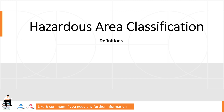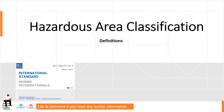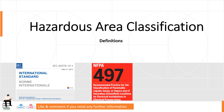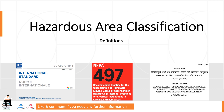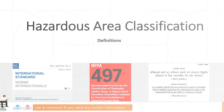Worldwide, different international standards are followed for hazardous area classification. The International Electrotechnical Commission, often called IEC, has published IEC 60079. The National Fire Protection Association, NFPA, has published NFPA 497, whereas the Indian standard is IS 5572 for classification of hazardous areas.